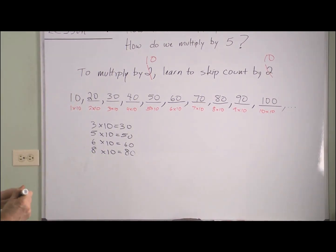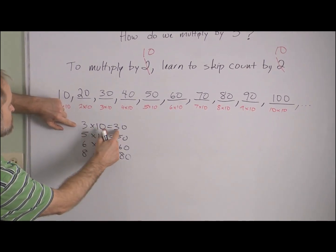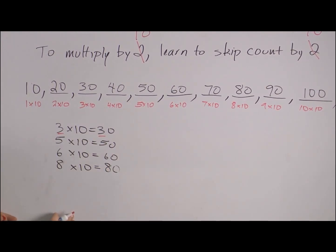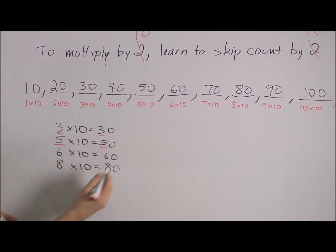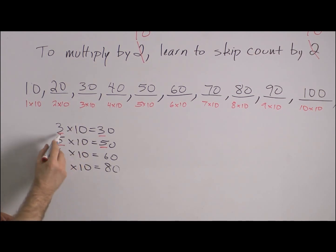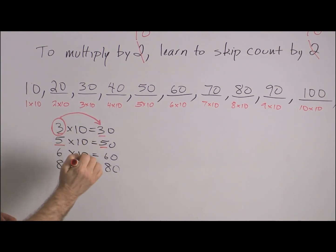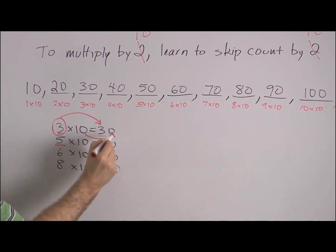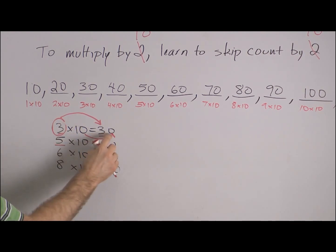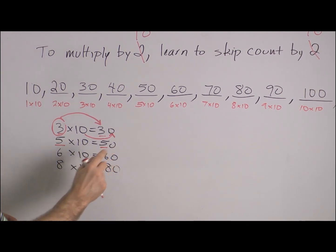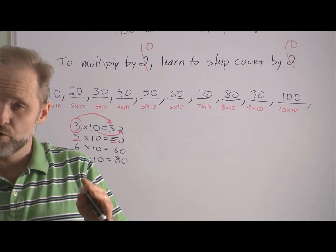Let's go ahead and take a look. I think if you look closely — three times ten is thirty — you've got the number three here and the number three in thirty. In the second one, we've got a five and also a five in fifty. When we multiply by ten, it's like taking the first number and copying it down, then putting the zero from the ten at the end. Three times ten is three with a zero at the end — thirty. Five times ten is five with a zero at the end — fifty.